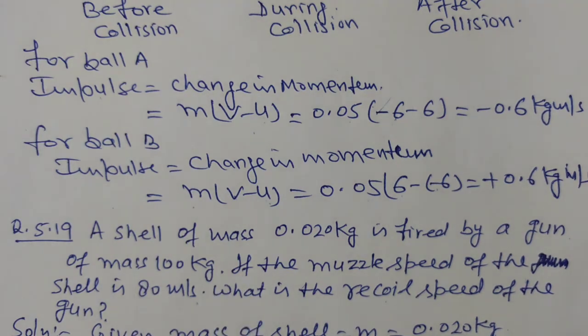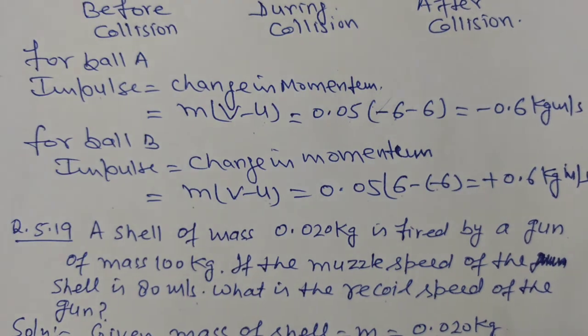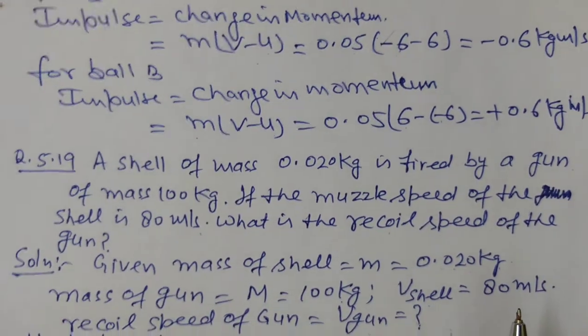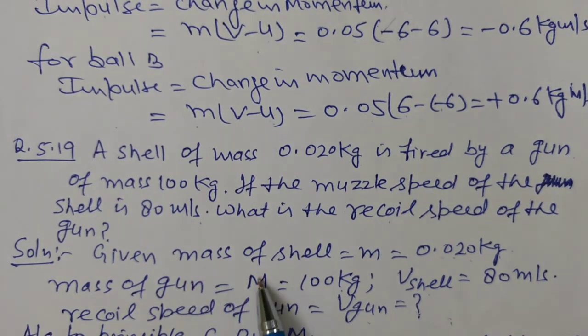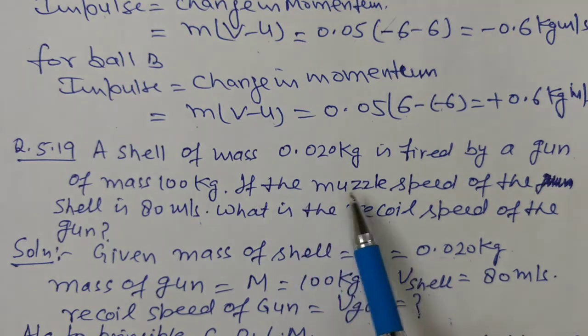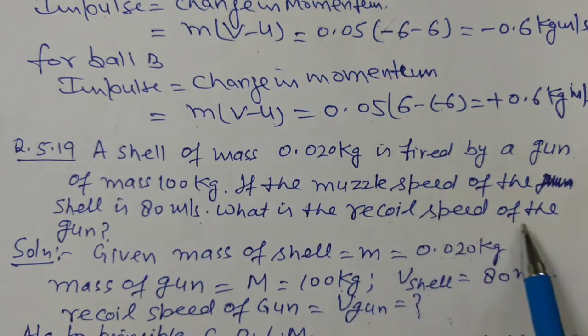We have a gun and shell system. The shell mass is 0.02 kg and the mass of the gun is 100. Mass of the shell, small m equals 0.02 kg. Mass of the gun, capital M equals 100 kg. The muzzle speed of the shell is 80 meter per second, V shell equals 80 m/s. Calculate recoil speed of the gun.